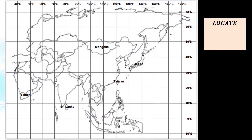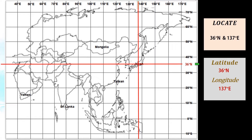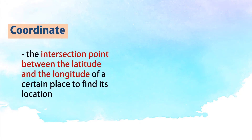Let us find out the country that is located at the coordinate of 36 degrees North and 137 degrees East. To locate the country, let us place the horizontal red line at 36 degrees North and the vertical red line at 137 degrees East. The point at which the latitude and longitude intersect is called a coordinate — the intersection point between the latitude and the longitude of a certain place to find its location.